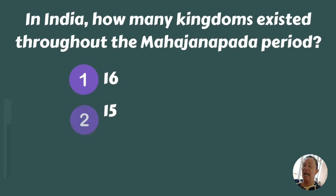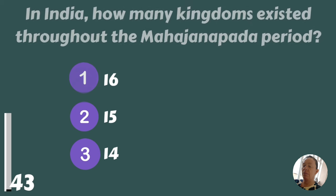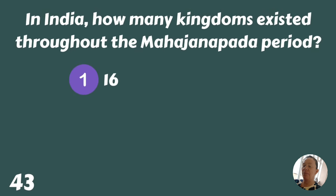In India, how many kingdoms existed throughout the Mahajanapada period — 16, 15, or 14? 16.